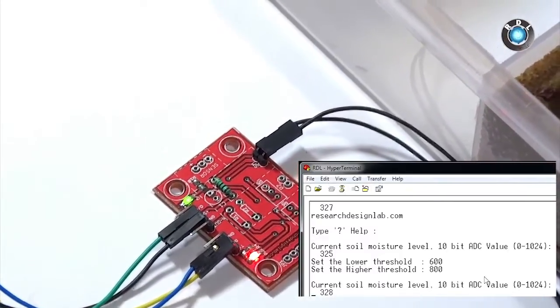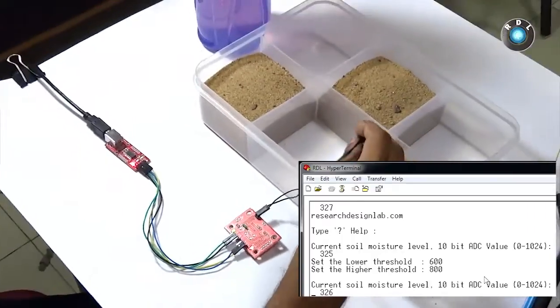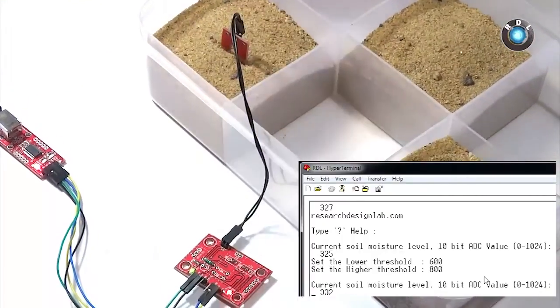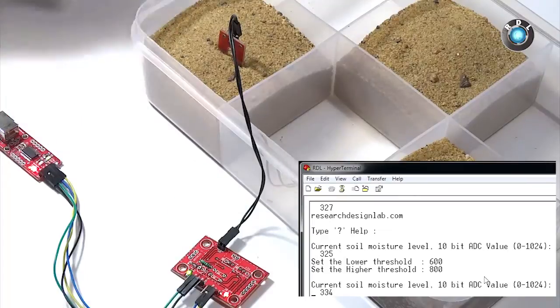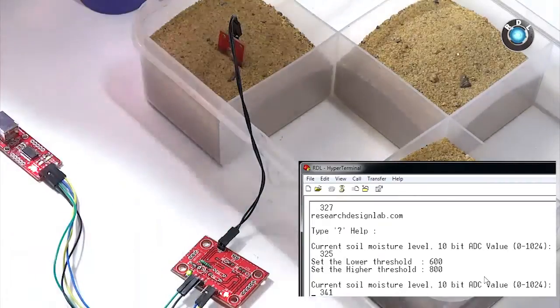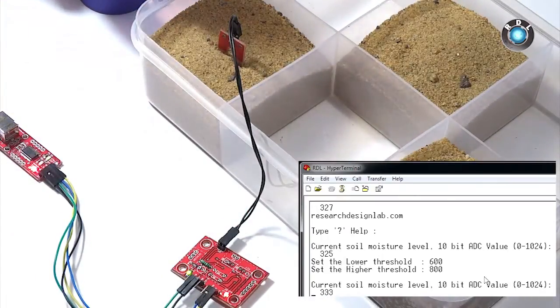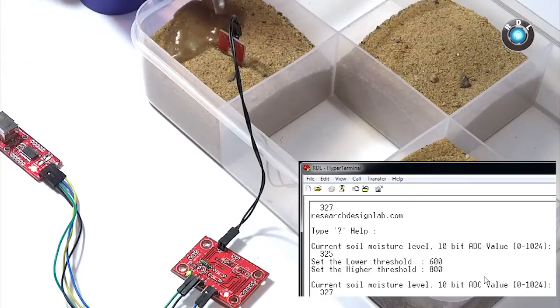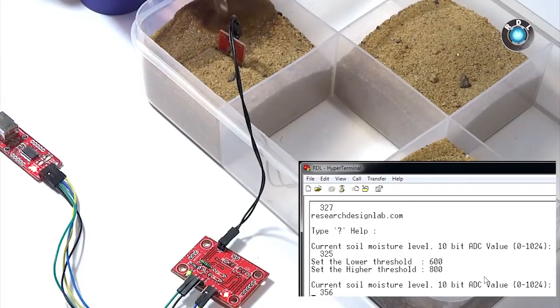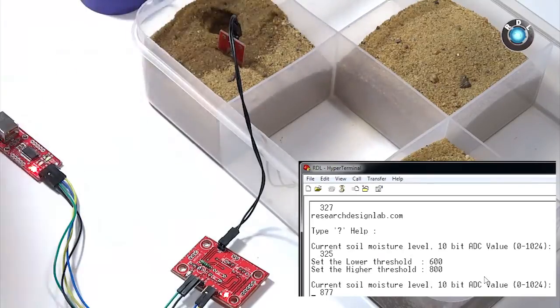Place the probes on the sand over here and start pouring some water into the sand. So basically your green LED or your output LED over here will remain on until the moisture level goes above 800, and the output LED will stay that way until the soil moisture level comes below the lower threshold. Here it is 600.